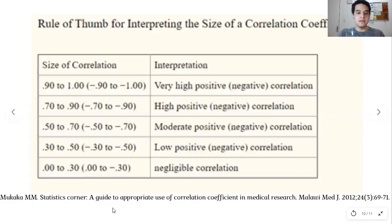Moukaka in his article discusses the size of correlation and its interpretation. A correlation of 0.90 to 1.00, whether positive or negative, represents very high correlation.